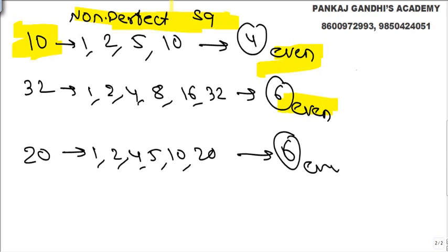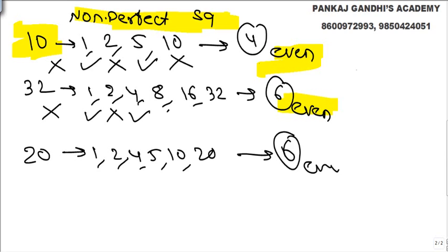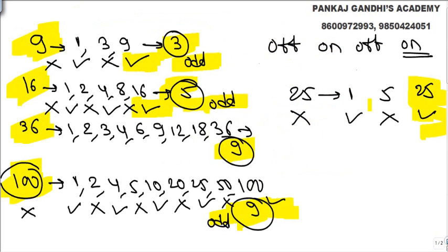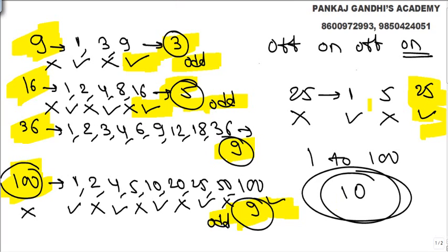So what will happen is: person 1 will switch on bulb 20, 2 will make it off, 5 will make it on, 10 will make it off. For 32: initially off, 1 makes it on, 2 off, on, off, on, off — changes even number of times, so off at the end. If they change even number of times, all these bulbs will be off. All the perfect square numbers will be on at the end: 1, 4, 9, 16, 25, 36, 49, 64, 81, and 100 — 10 bulbs will be on.